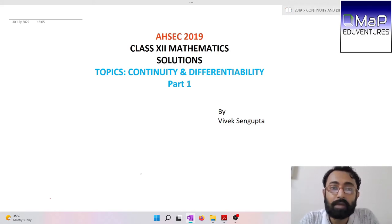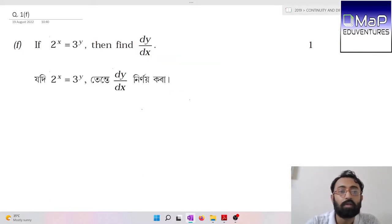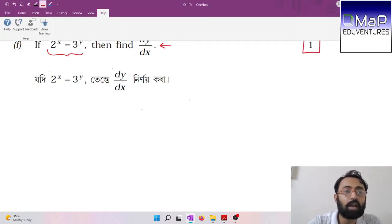Welcome to Mebha Ventures. We will discuss 2019 continuity and differentiability part questions. Let us begin. Our first question is: if 2 to the power x equals 3 to the power y, then find dy/dx. This is a one marker question.